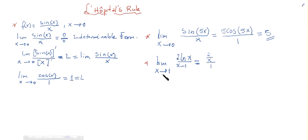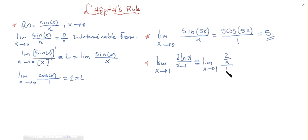So we have the limit when x tends to 1 of 2 over x divided by 1. Applying x equals 1 gives us 2. That is our result.